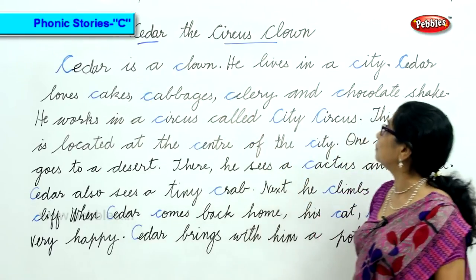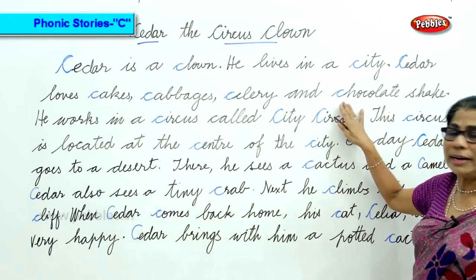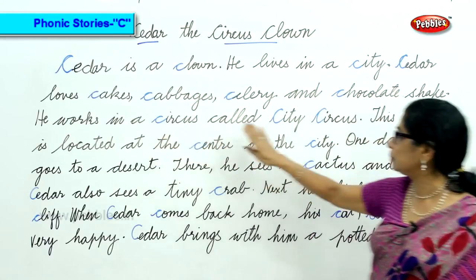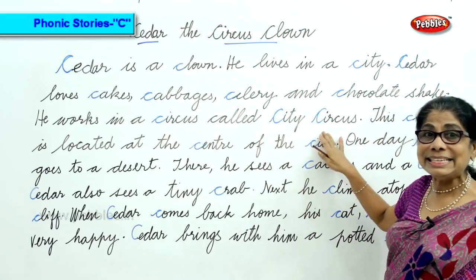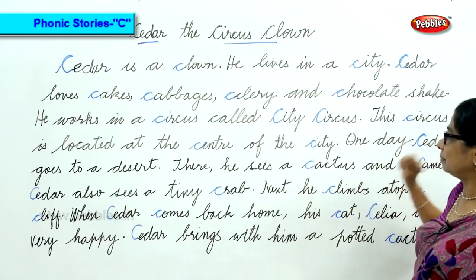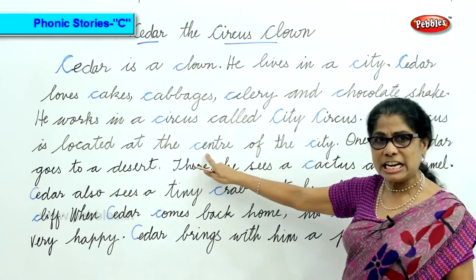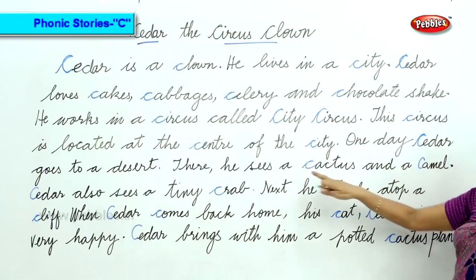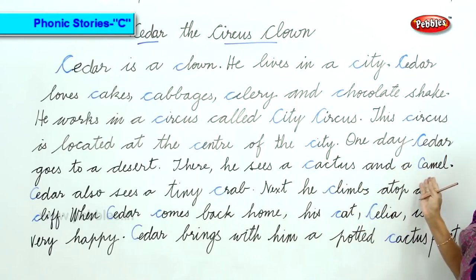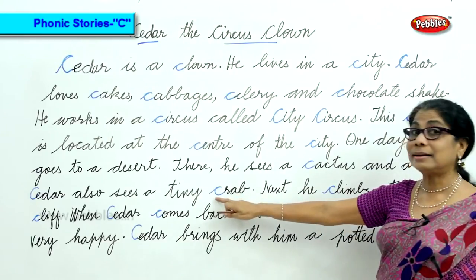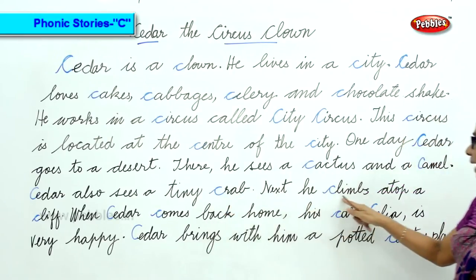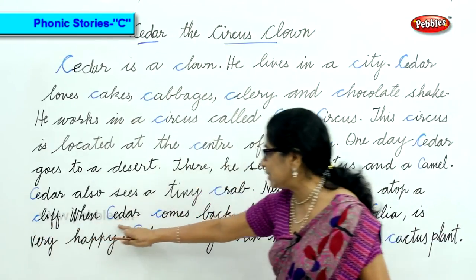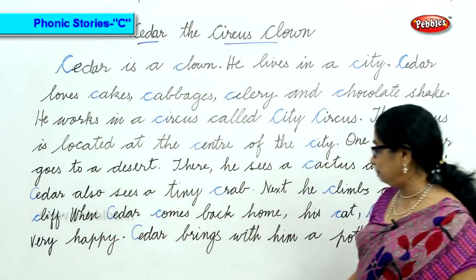So the K sound words from the story: Cedar, clown, city, cakes, cabbage, celery, chocolate, circus, City Circus, center, city, Cedar, cactus, camel, crab, climbs, cliff, Cedar, cat.